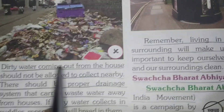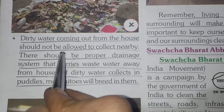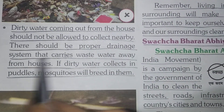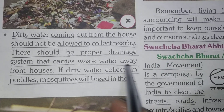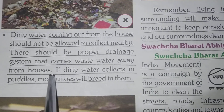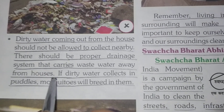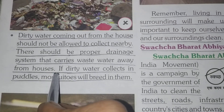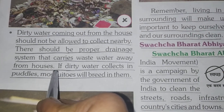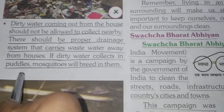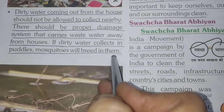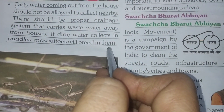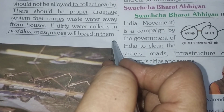Dirty water coming out from the house should not be allowed to collect nearby. There should be a proper drainage system that carries waste water away from houses. If dirty water collects in puddles, mosquitoes will breed in them.